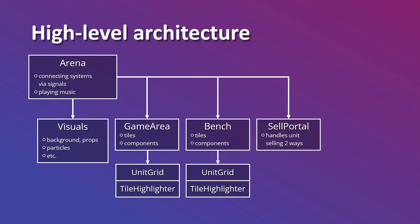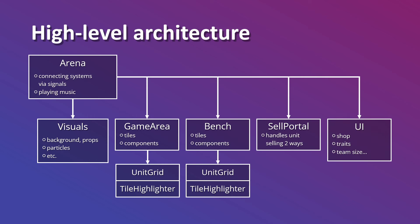Then we have a cell portal, which is its own separate thing that handles unit selling in two ways — either by dropping a unit over it or by hovering over a unit and seeing the quick sell button. Last but not least, we also have UI related stuff. It's not that much yet in season one, but we have the shop UI, we have the traits on the left, and we have the little team size display with the exclamation mark in the middle. That's how the high level architecture looks — it's not too bad, but you also need to understand that we need a bunch of other components to make this work.